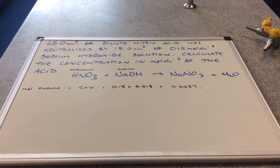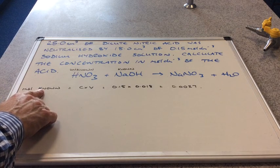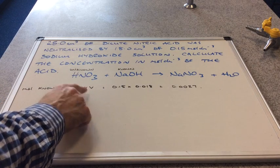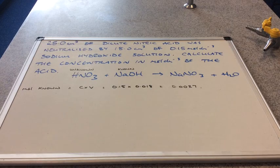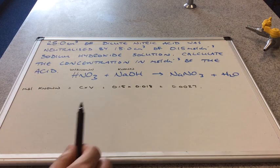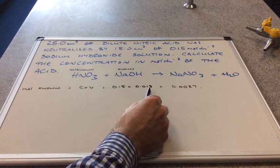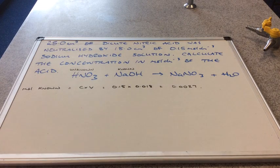The first thing we do is calculate the moles of our known substance. Because this is a solution, moles equals concentration times volume. The concentration is 0.15, and the volume must be in decimetres cubed — we're given it in centimetres cubed, so we divide by 1000, giving 0.018 dm³. So the moles of sodium hydroxide come out at 0.0027.